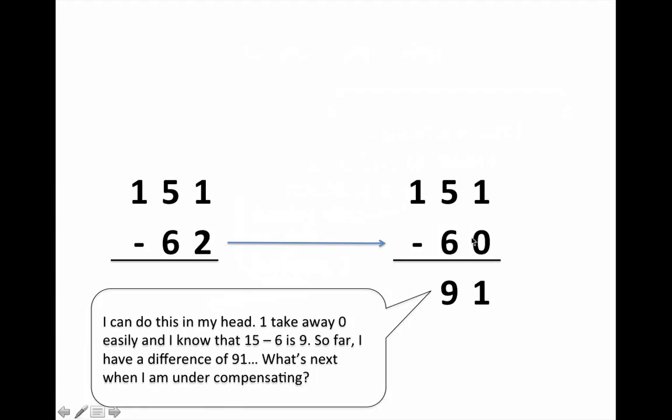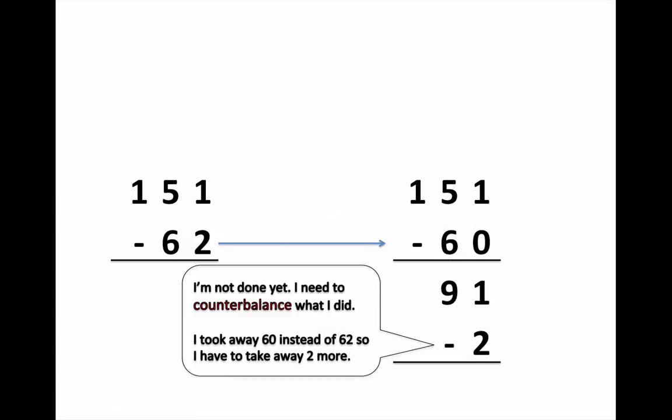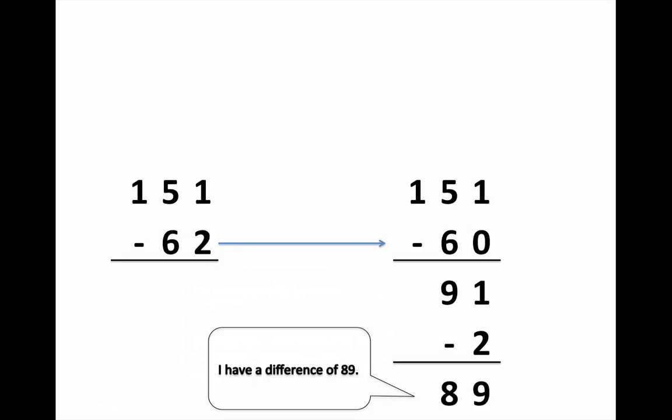What's next when I'm undercompensating? You can see here that taking away 60 is much easier than taking away 62. There's no regrouping involved. One take away zero is one and 15 take away six is nine. I'm not done yet. I need to counterbalance what I did. I took away 60 instead of 62 so I have to take away two more. I have a difference of 89.